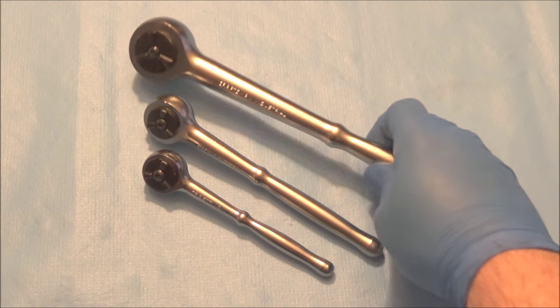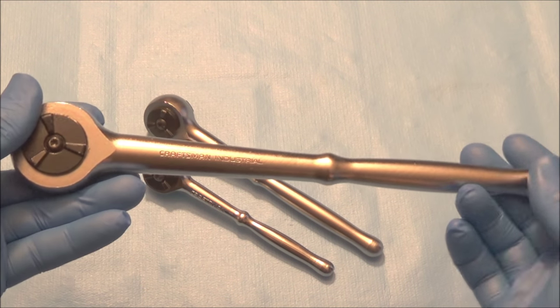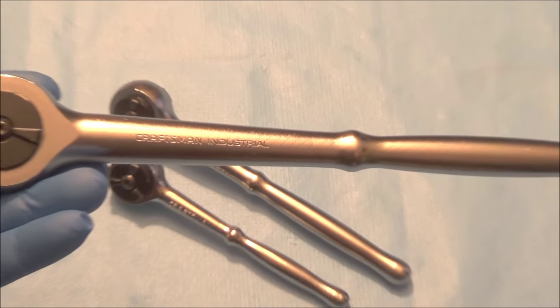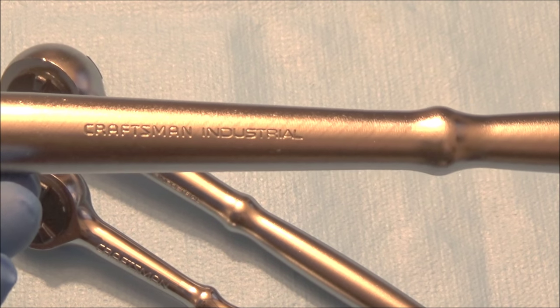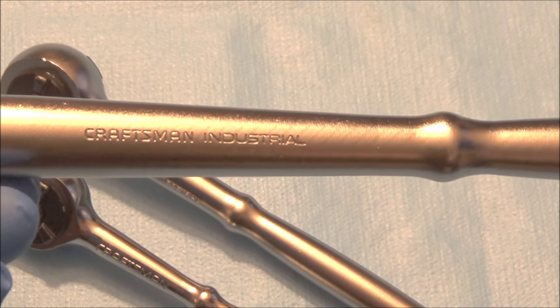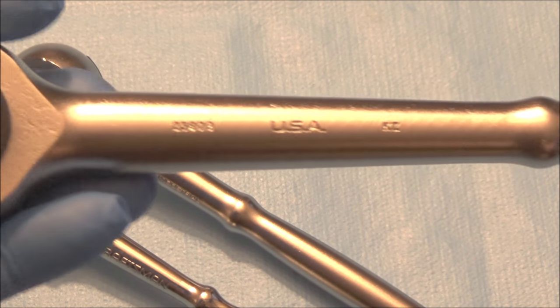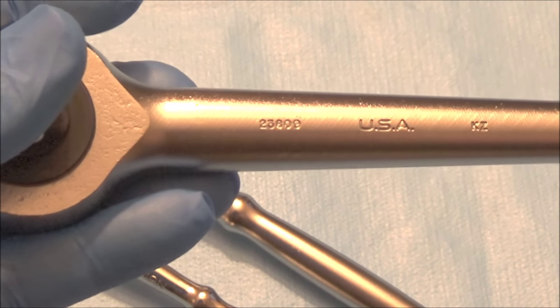So I'll show you the ratchet itself. I have two sizes that are the industrial grade or industrial version. And contrary to the standard Craftsman, these have a 20,000 series number.